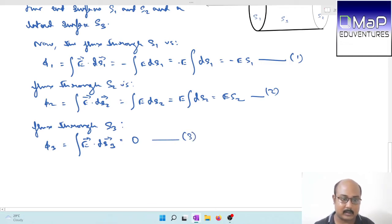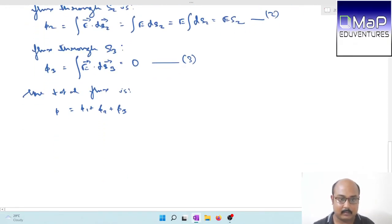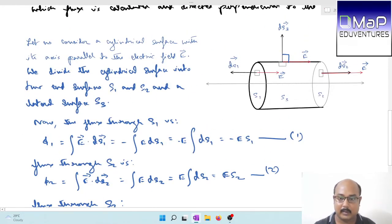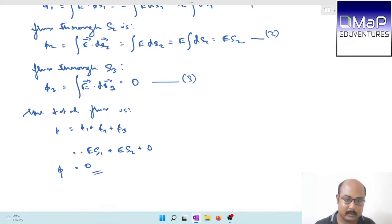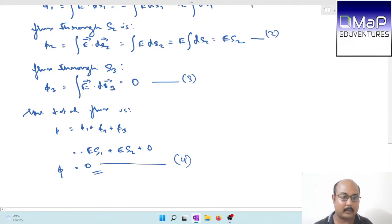The total flux through the surface is the sum of phi 1, phi 2, and phi 3. Total flux phi equals phi 1 plus phi 2 plus phi 3. Phi 1 equals minus E S1, phi 2 equals E S2, and phi 3 equals zero. Since S1 and S2 are equal, the total flux through the surface equals zero. Ultimately, the total flux through this cylinder will be zero.